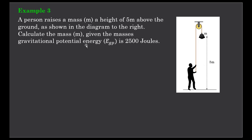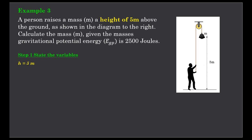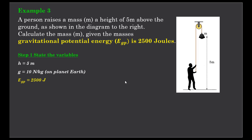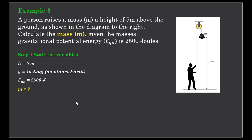Finally, example three: a person raises a mass M to a height of 5 metres above the ground as shown in the diagram. We want to calculate what mass, when raised 5 metres, gains a gravitational potential energy of 2500 joules. Let's write down the variables: height is 5 metres, gravitational field strength is 10 newtons per kilogram. The equation is EGP equals MGH.